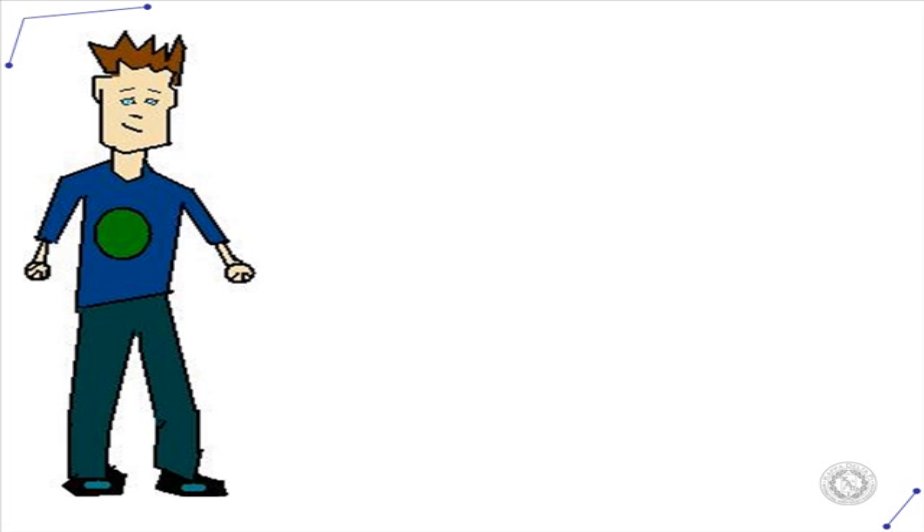If I wanted half a pizza, I would write it as one over two and cut my pizza into two pieces. Each would be half of the whole pizza.